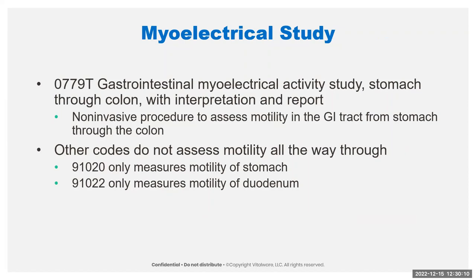There's another code, 0779T, the gastrointestinal myoelectric activity study, for the stomach through the colon. This is a noninvasive procedure to assess the motility of the GI tract — it's like an EKG, but instead of checking the heart, it's checking your GI tract. It can be for patients with maybe a prolonged ileus, or GI pain, or other motility problems. There are other codes that assess motility but they don't go all the way through from the stomach to the colon, so this is a single code covering the whole route.